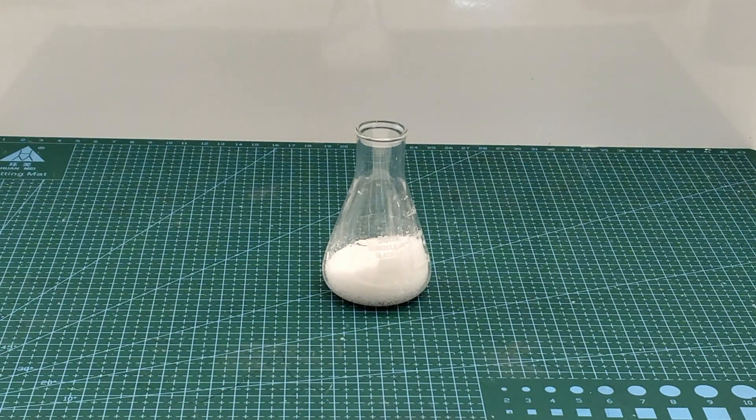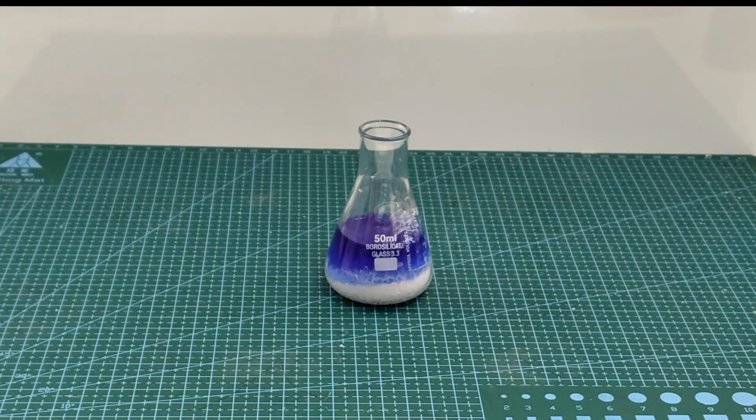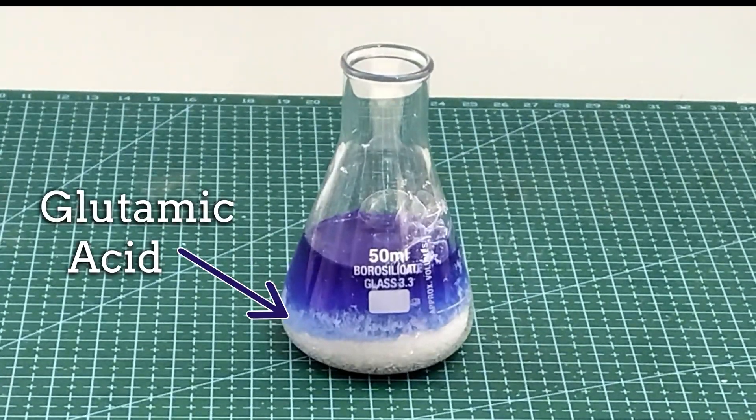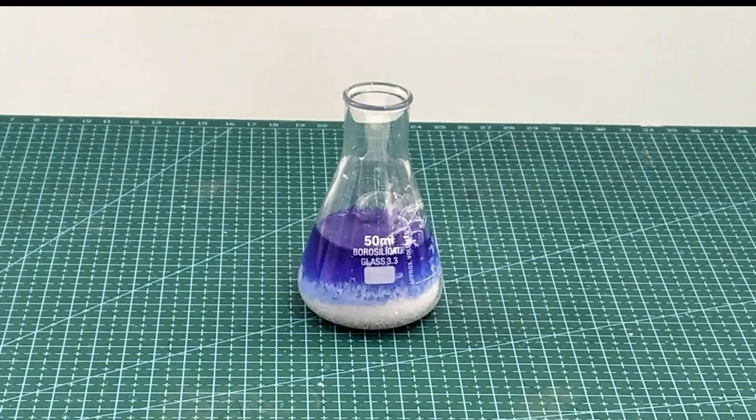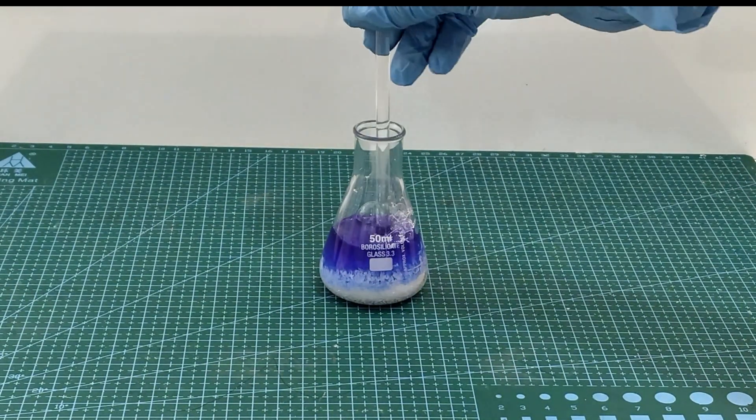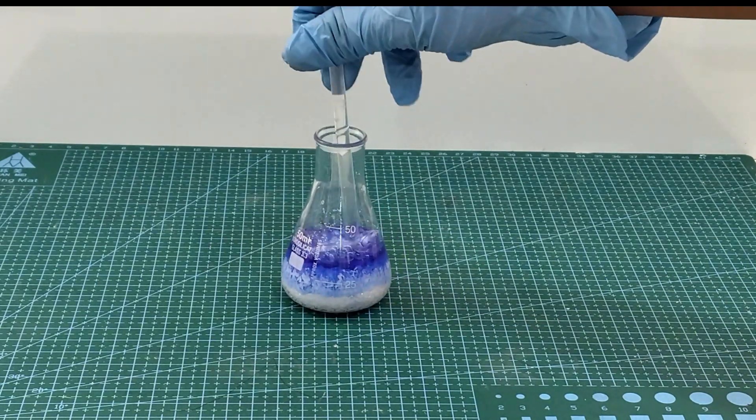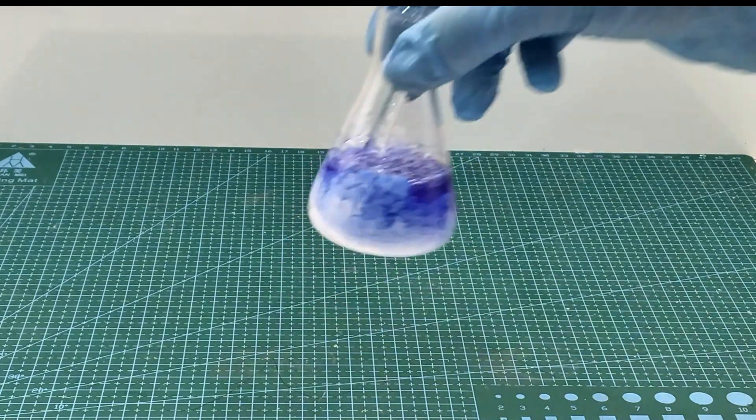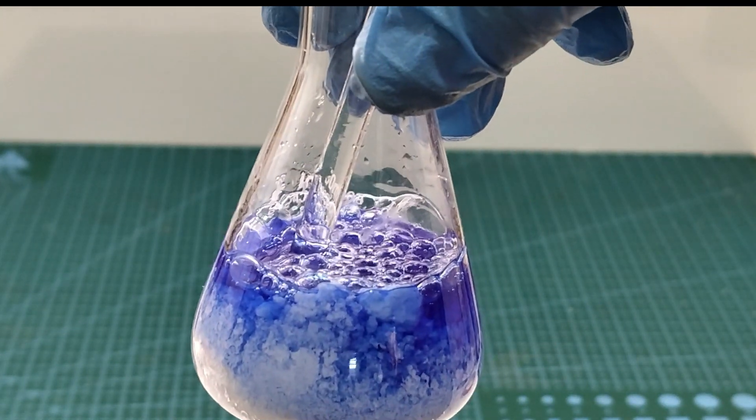After moving the MSG to a conical flask, I start by adding the Harvick. The stuff floating on the MSG crystals is actually the glutamic acid being formed. Here you can see the glutamic acid more clearly after the mixture has been stirred.